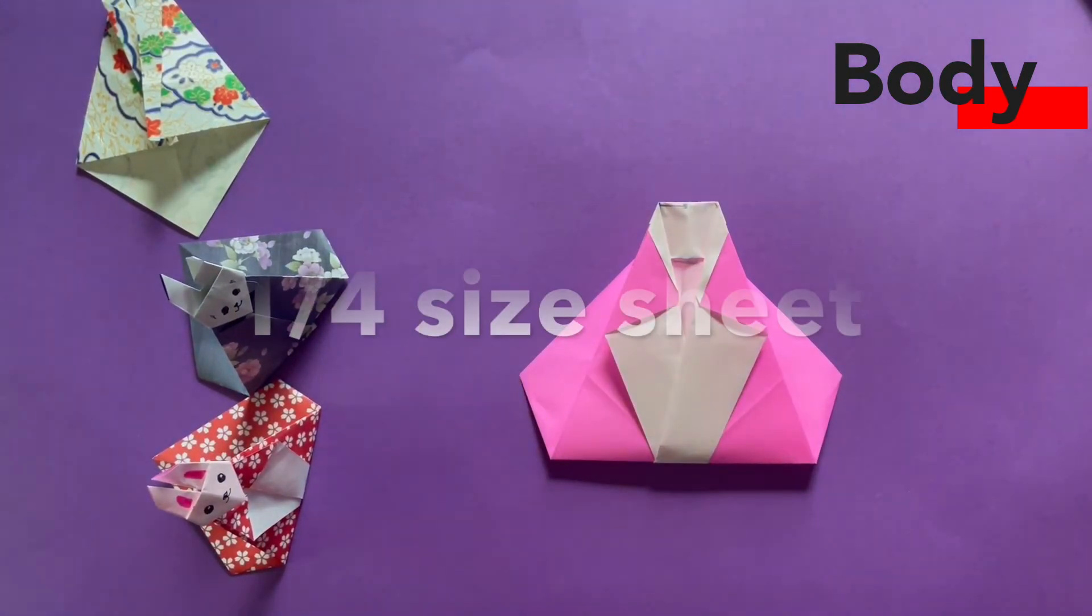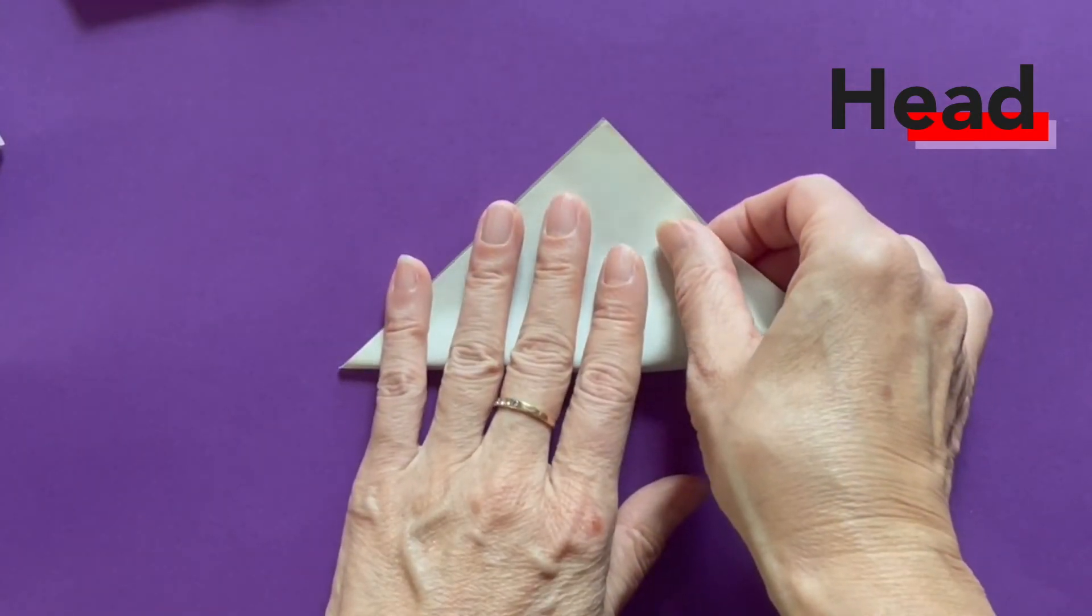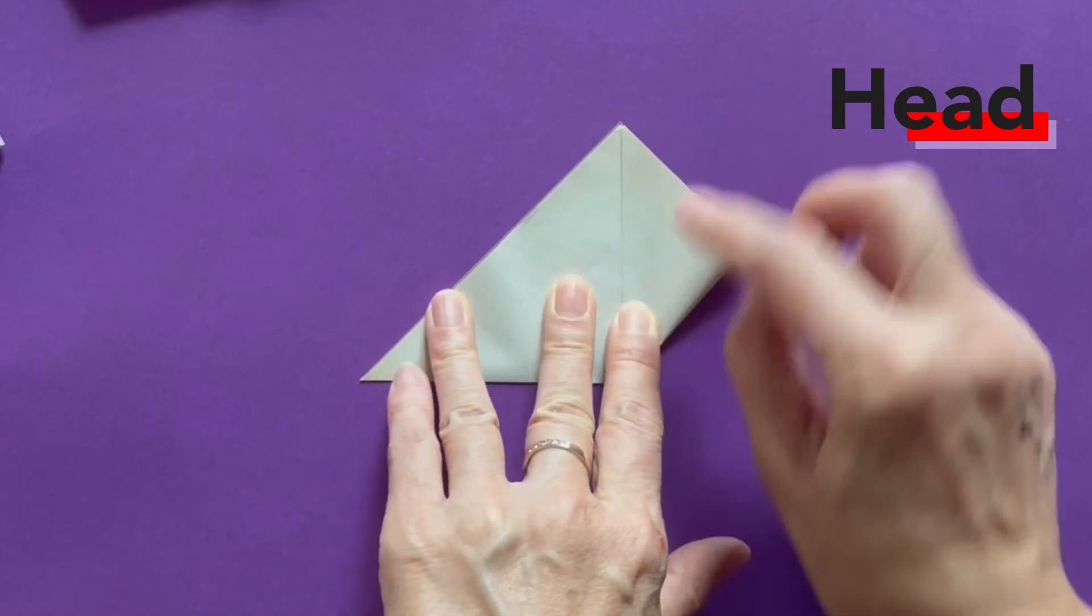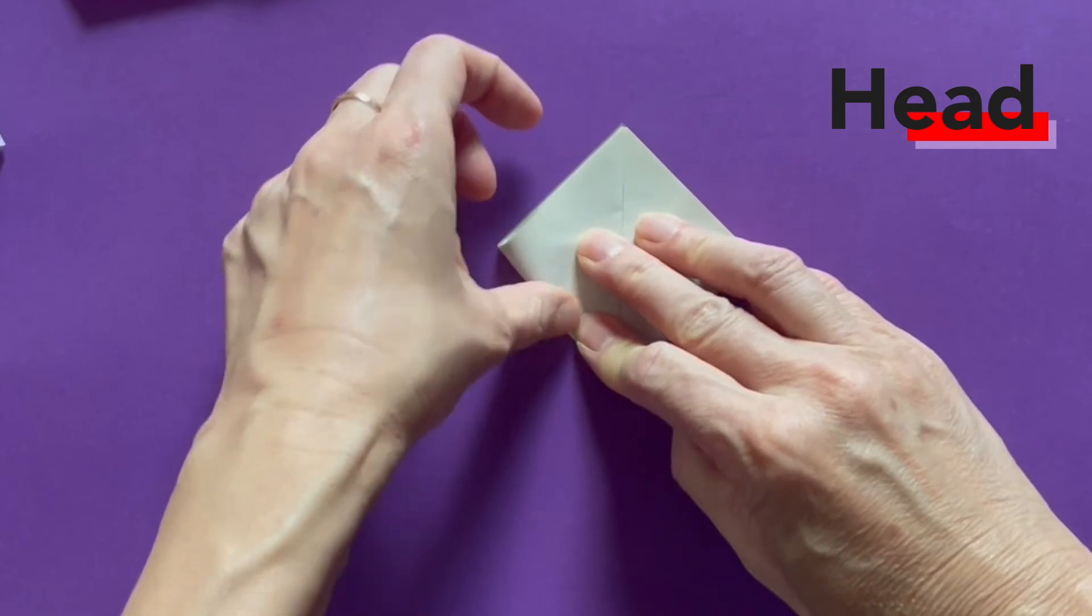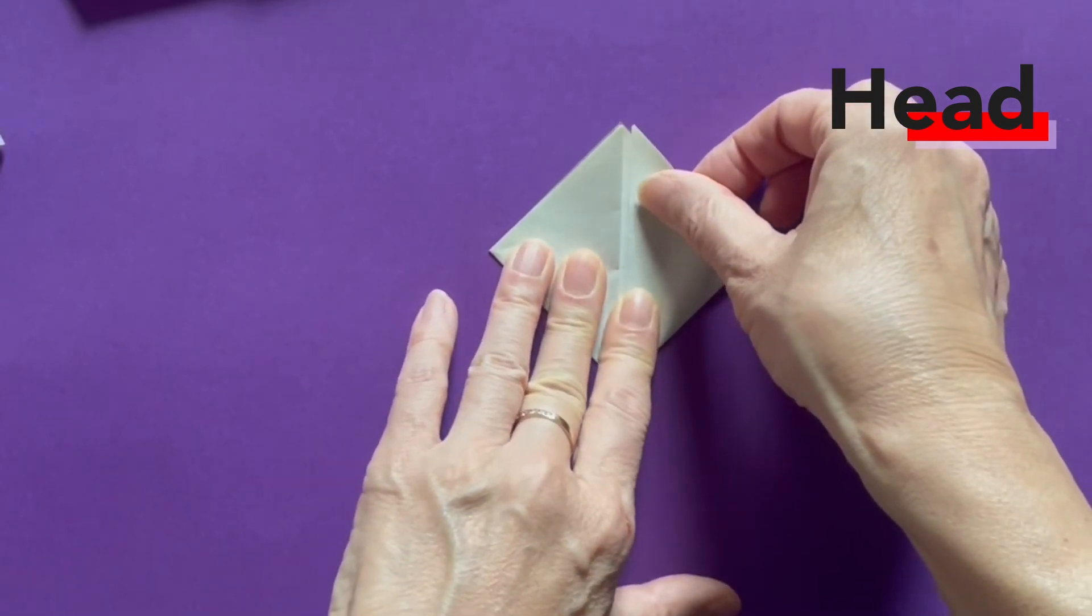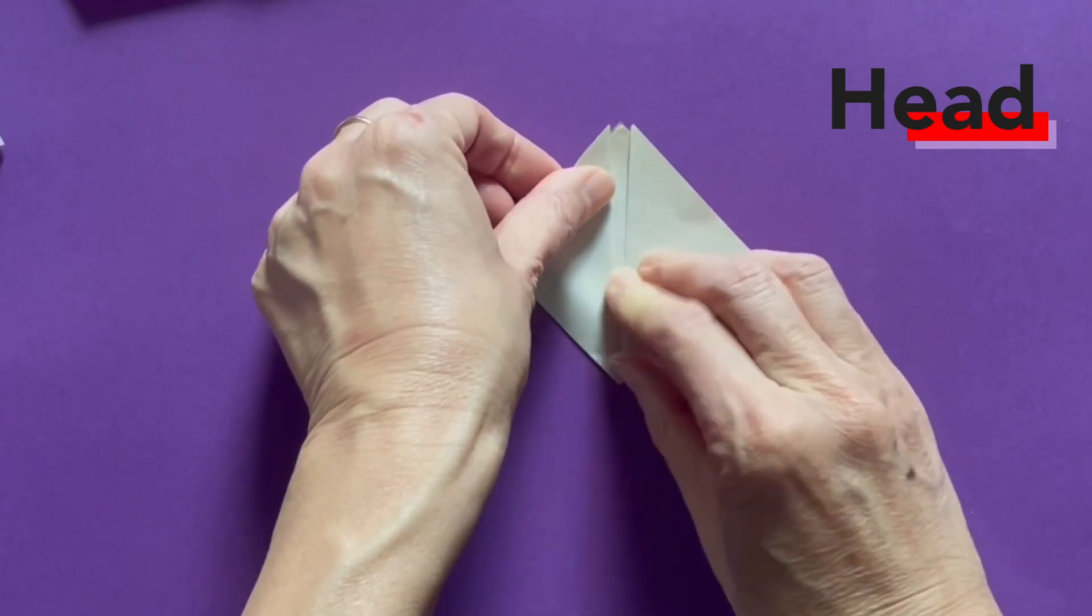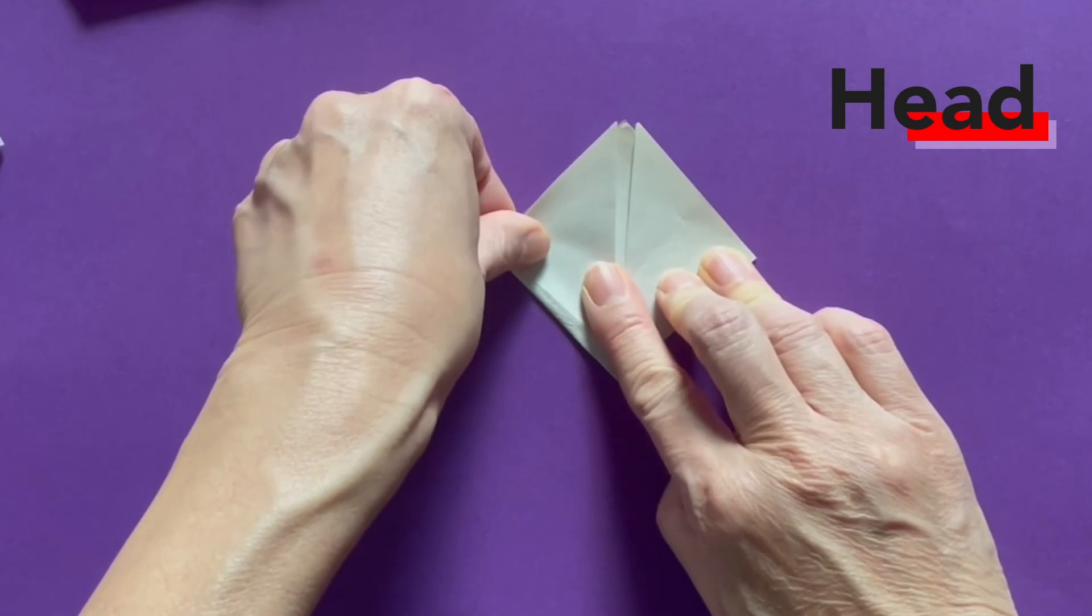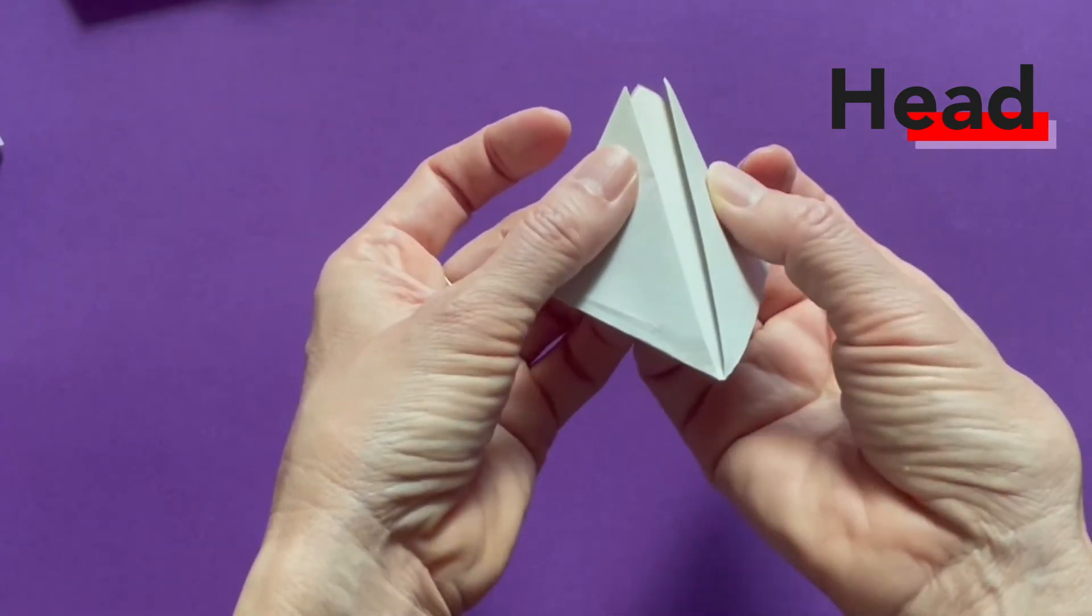The head part is a quarter size of the paper that you used for the body. Fold it in half to triangle. Fold the bottom to the top. This is much smaller paper, so it might be hard, but we can do this. Fold the two bottom triangle vertices to the top vertex. And next, I am just making a little gap between the two triangle flaps. That's all I'm doing. You folded two triangle flaps matching at the center, but make the center a little wider so that you have a little gap between the left and the right. And turn it over to the back side.